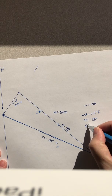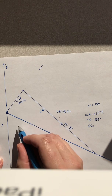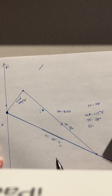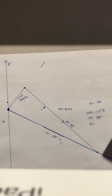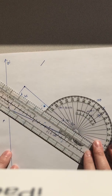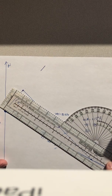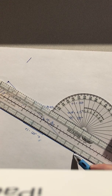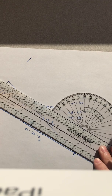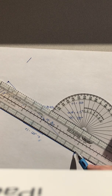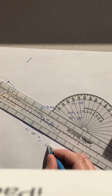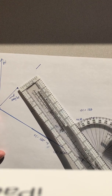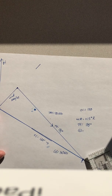The last step is to find our ground speed. We measure the length of the original true course line from the starting point to where the third triangle side intersected it, using the exact same scale we used for the other measurements. Measuring that distance gives us a ground speed of 103 knots. And that's how you do a wind triangle.